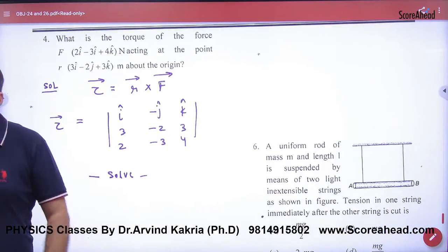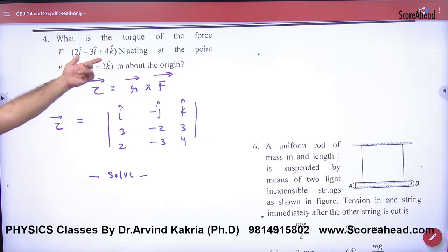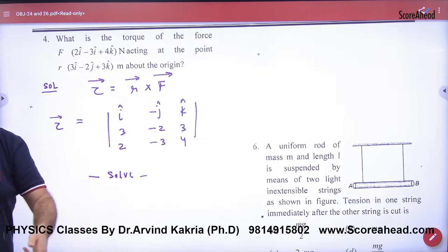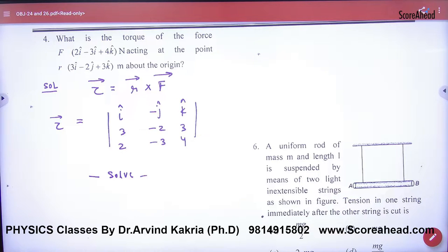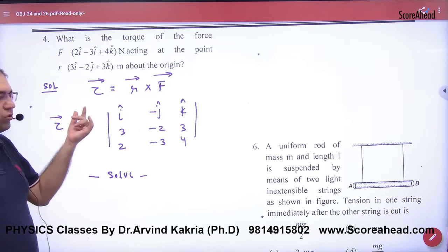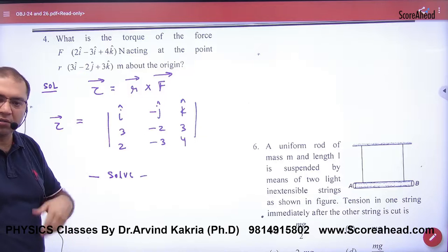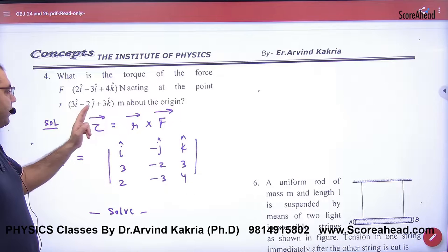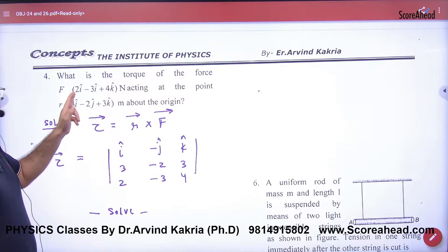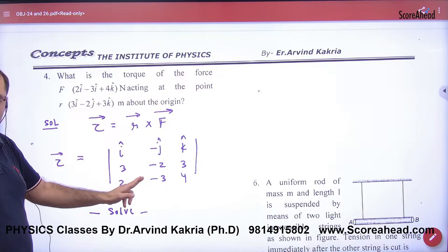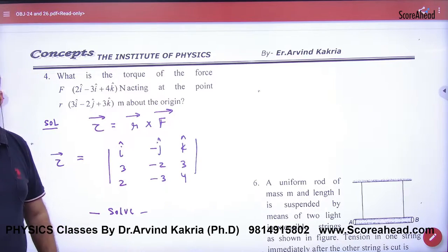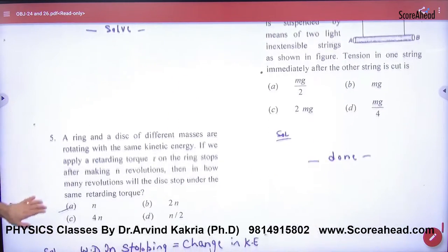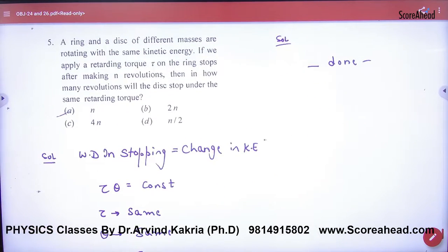What is the torque when force vector and r are in vector form? When both are in vector form, we learned torque. Torque is a vector. Torque vector is r vector cross F vector. You know r vector coefficients: three, minus two, three. F vector coefficients: two, minus three and four. What do you have to take? Cross product. We did vectors, cross product, we know how to take it. So from here cross product, the answer will come.